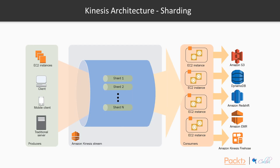A Kinesis stream can have between one and N shards — that's your unit of scalability. Producers write data to the stream, Kinesis distributes records across shards, and it's important that your partition key has even distribution so data is equally spread across shards. Consumers such as EC2 instances or Lambda functions then read from those shards and write processed data downstream to other data stores. We now understand what Kinesis is, when it's appropriate to use a streaming service, and the common architectural patterns for using Kinesis.